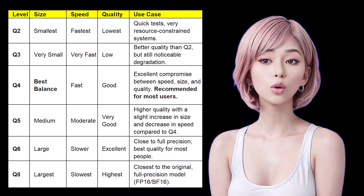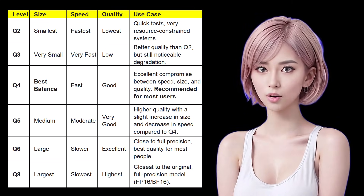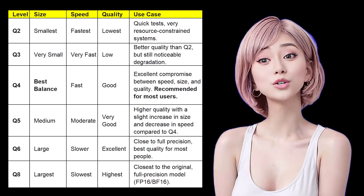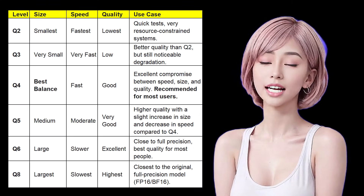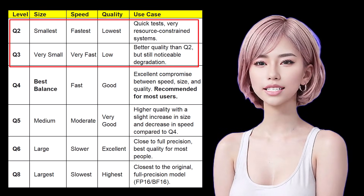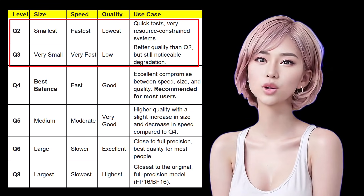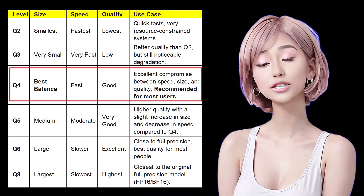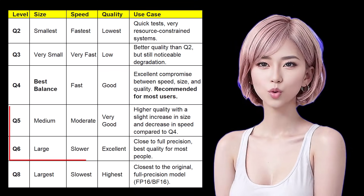When you go to download a GGUF model, you'll see file names like Model14B_Q4KM.GGUF or Model14B_Q50.GGUF. Let's decode this. The Q followed by a number — like Q2, Q4, or Q8 — refers to the quantization level. Q2 to Q3: smallest size, lowest quality, usually for quick testing or very constrained systems with low VRAM. Q4: best balance of size and quality, recommended for most users.